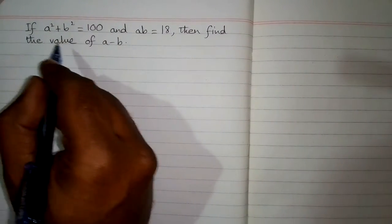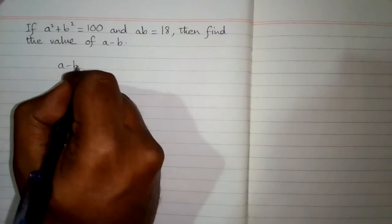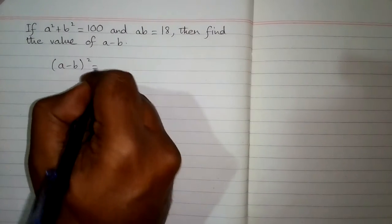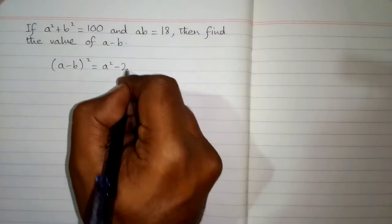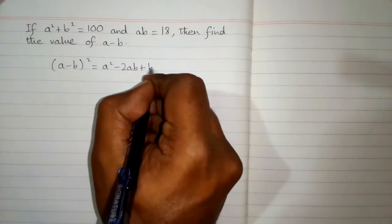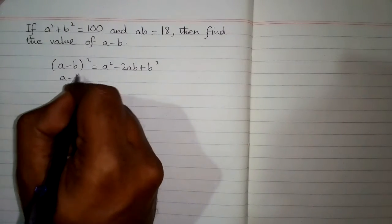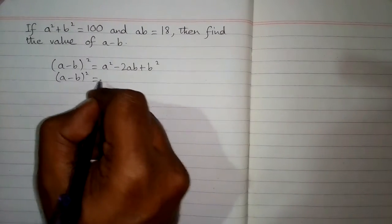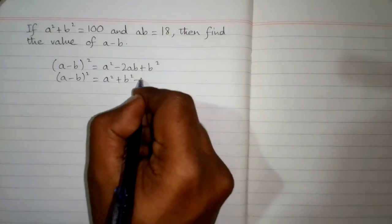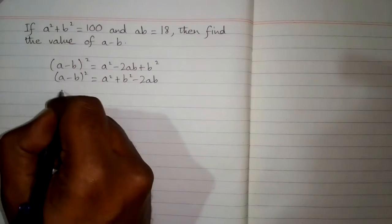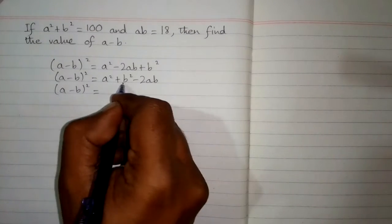To solve this problem we can use an algebraic identity: (a minus b) whole square is equal to a squared minus 2ab plus b squared. Now (a minus b) whole square can be written as a squared plus b squared minus 2ab.